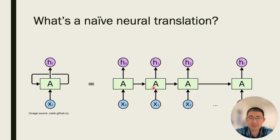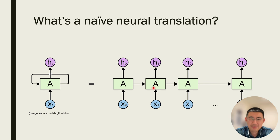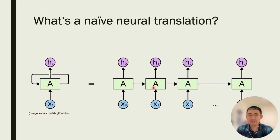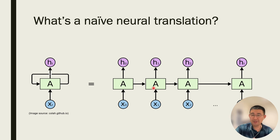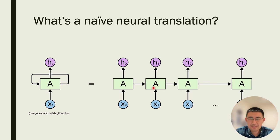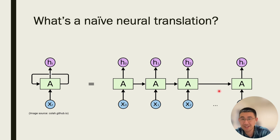But there are a lot of problems we need to solve. The first problem is sometimes the information that I need to say is not only possible to be before, but also possible to be after, especially when I'm translating between languages. So what if what I need to say depends on what I'm going to say?